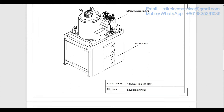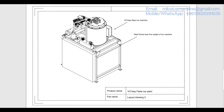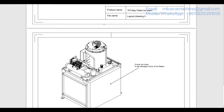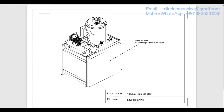We go on with the layout drawing. This is layout drawing number 3, checked from the back. This is layout drawing number 4. We always recommend a 5 ton ice room for a 10 ton per day machine — the storage capacity of 5 tons of ice flakes is enough to collect all the ice flakes made in the night time, so when the user opens the ice room door in the morning, the ice room is full of ice flakes. This is all the information about the dimension and layout of our standard 10 ton per day flake ice plant.